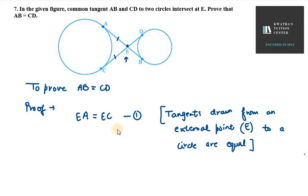So EA is equal to EC. Now we are talking about the smaller circle. Here the external point is E, so ED is equal to EB.